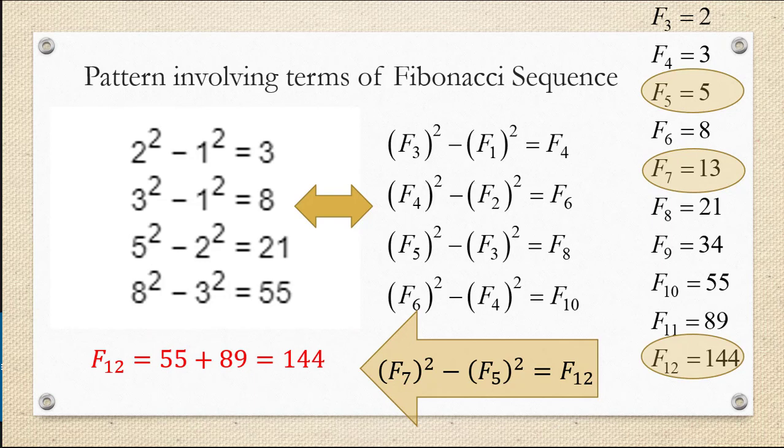So now we have the 12th term, and that's the one we need to predict our equation. So we have F sub 7 squared becomes 13 squared, F sub 5 squared is 5 squared, and now F sub 12 is 144. That should be the next equation in the pattern, but let's just confirm that it's actually a true statement. 13 squared is 169 minus 5 squared, which is 25, does equal 144. So we have our answer.